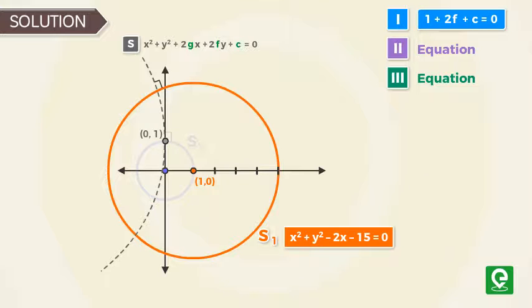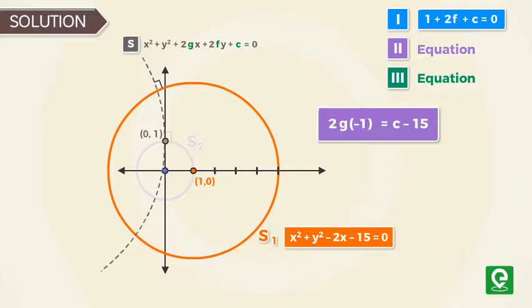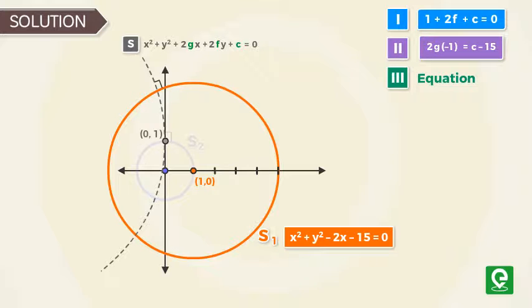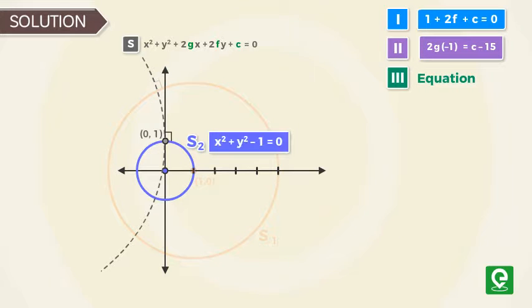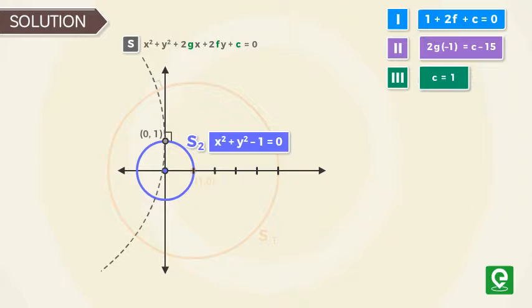Since S and S₁ are orthogonal, applying the condition of orthogonality we get c = 1. Let us call this equation 2. Similarly, S and S₂ are orthogonal, so by applying the condition of orthogonality we get c = 1. This is our third equation.